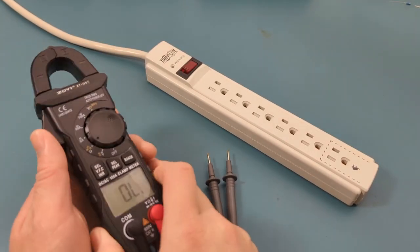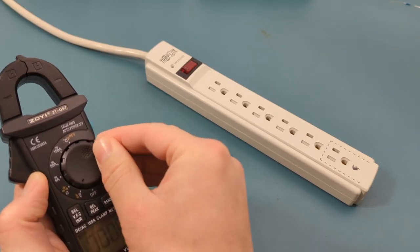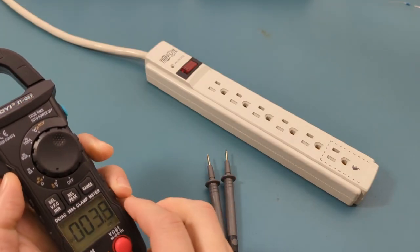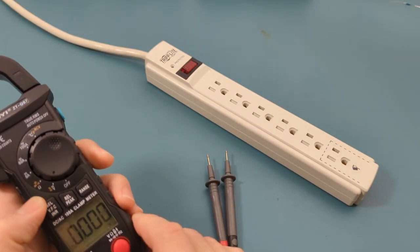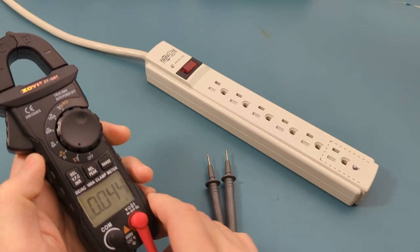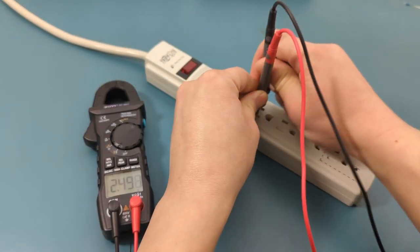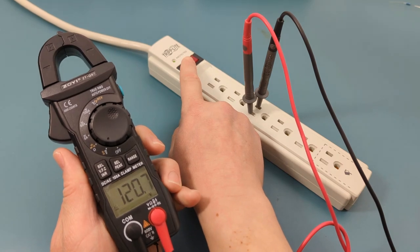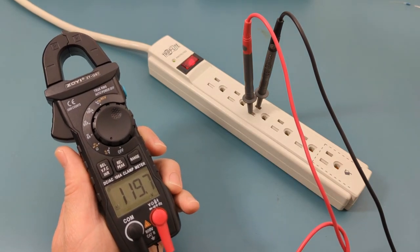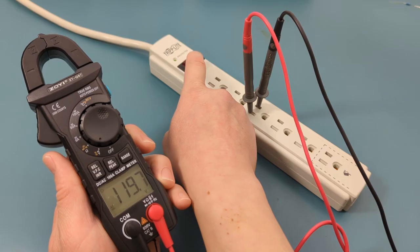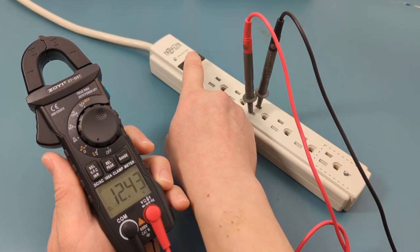Next, we'll test the AC voltage of the power strip that's connected to a wall outlet. Turn the dial to the AC DC voltage and toggle to the AC mode. When I turned on the power, the reading showed around 120 volts, which is expected.